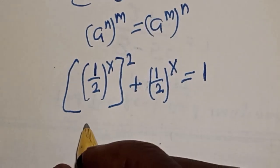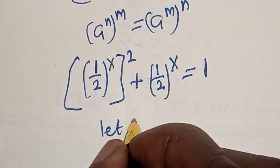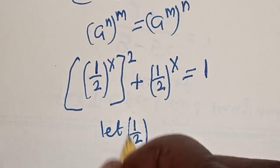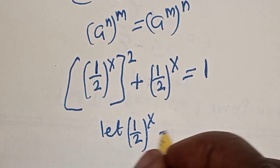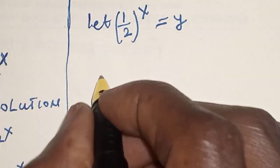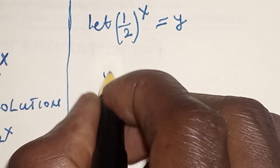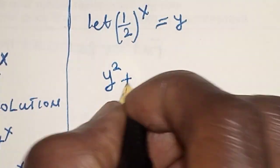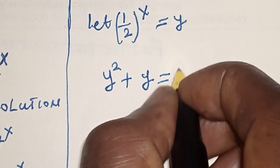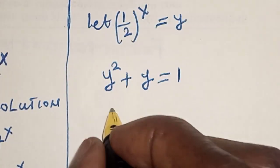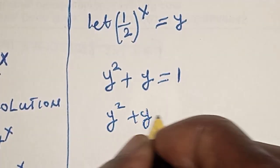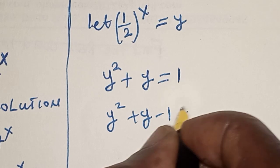Now let's substitute: let y equal (1 over 2) raised to the power s. This becomes y squared plus y is equal to 1, which gives us y squared plus y minus 1 is equal to 0.